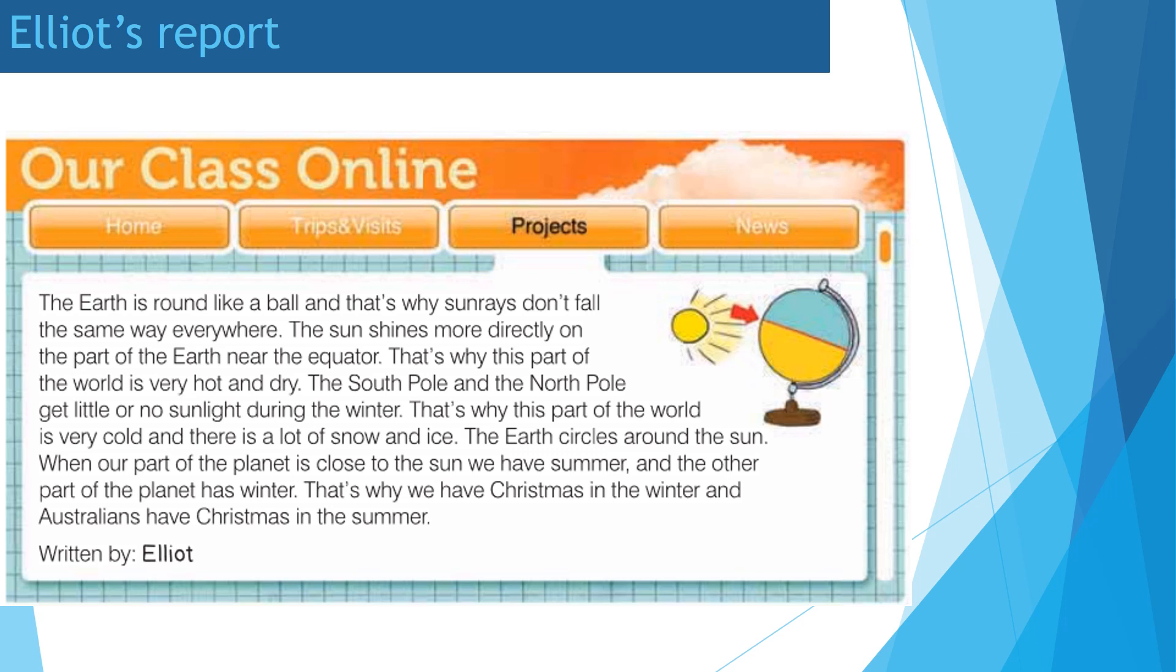And now let's listen to Elliot's report. The Earth is round like a ball, and that's why sun rays don't fall the same way everywhere. The sun shines more directly on the part of the Earth near the equator. That's why this part of the world is very hot and dry. The South Pole and the North Pole get little or no sunlight during the winter. That's why this part of the world is very cold, and there is a lot of snow and ice. The Earth circles around the sun. When our part of the planet is close to the sun, we have summer, and the other part of the planet has winter. That's why we have Christmas in the winter and Australians have Christmas in the summer. Written by Elliot.